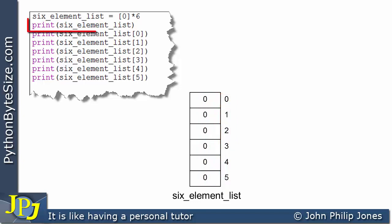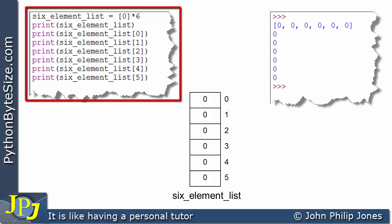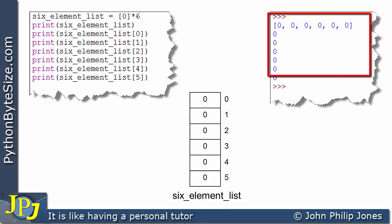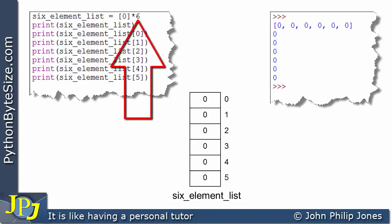Now here we print the six_element_list, and these program statements print each of the elements in turn. So the output from this program, we would expect it to look like this. There's the list in its entirety, and those are the contents of each of the elements in the list. And if you look, you can see there are six elements. So if you wanted a 100 element list, you come here and you replace that six by 100.